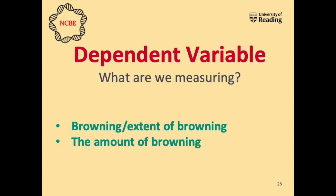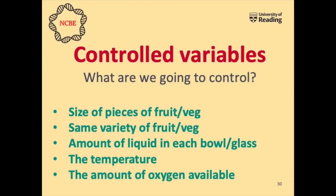Lastly, we need to control several things. The ones that came to mind for me were: the sizes of the fruit and vegetables, making sure each piece is the same size; the amount of liquid in each bowl or glass; the temperature, making sure they're all in the same place; and the oxygen, making sure none are covered and all are exposed to the same amount. Controlling these factors ensures we run a fair test, making our results reliable and allowing us to draw a good conclusion.